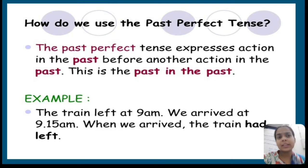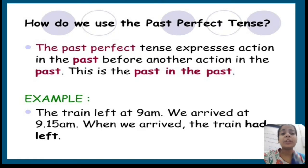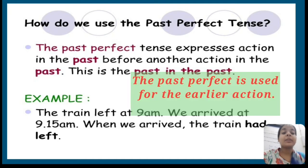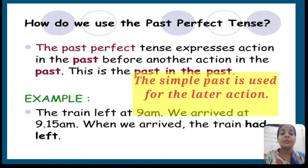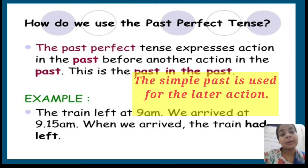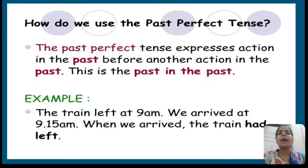It's very easy — just two things to keep in mind. When two actions occur in the past, you have to see which action occurred first and which occurred second. The action which occurred first — we will use past perfect tense. And the action which happened later, the second action — we will use simple past tense. This is how we use past perfect tense.